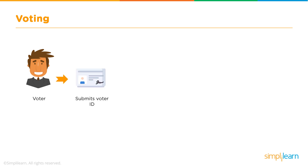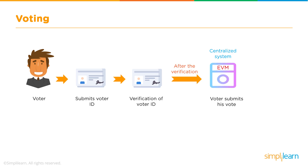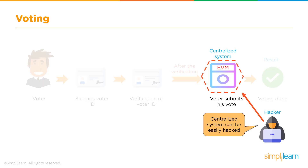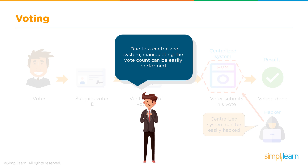Now let's look at how blockchain can help with the voting process. Before blockchain, a voter would have to submit their voter ID, which would need to be verified. After verification, the voter submits their vote to the EVM, or electronic voting machine. However, it is possible for the EVM to be hacked since it's a centralized system, which can lead to manipulation of the vote count.